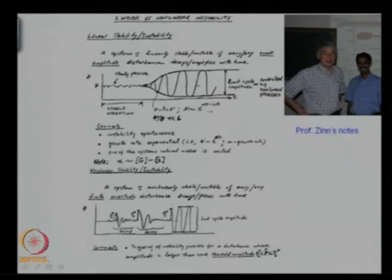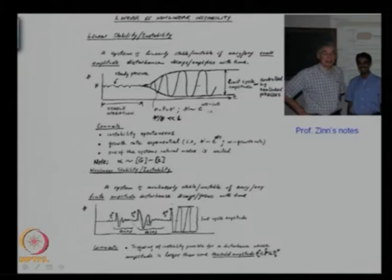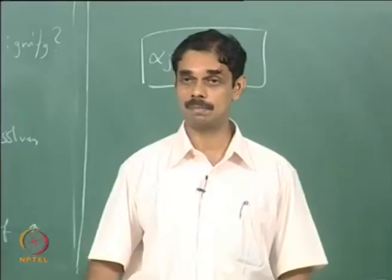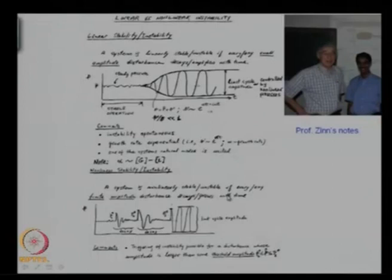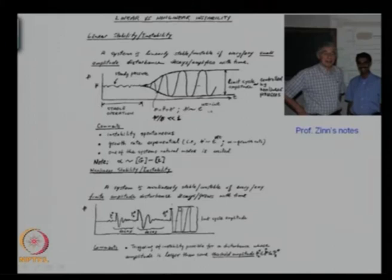I must acknowledge Professor Zinn who gave me these notes — he is a legend in this subject and was also my advisor. A system is stable and will stay stable forever if there are no perturbations, but if you perturb with an amplitude like p1-star or p2-star, it decays, whereas p3-star was high enough that the system went to limit cycle oscillations. The issue is whether this non-normal operator plays any role in this, although triggering is a non-linear phenomenon. The threshold amplitude would be comparable to the limit cycle oscillations — whether that is right is what we are going to examine.